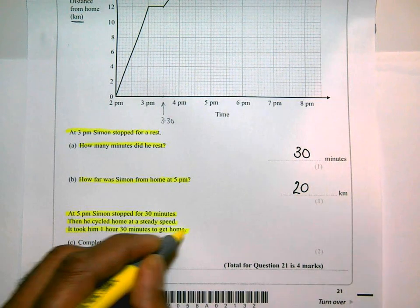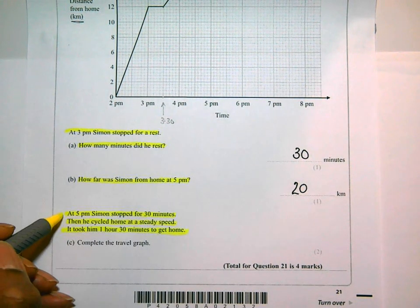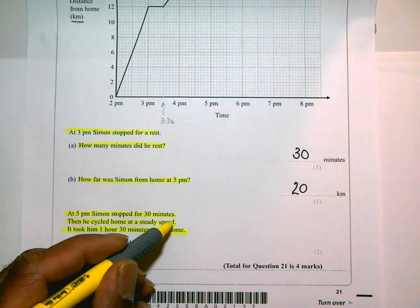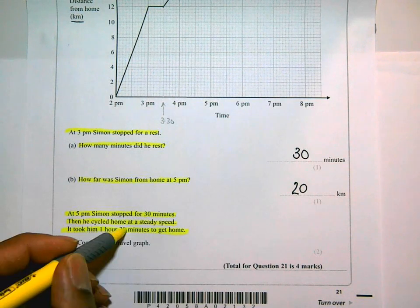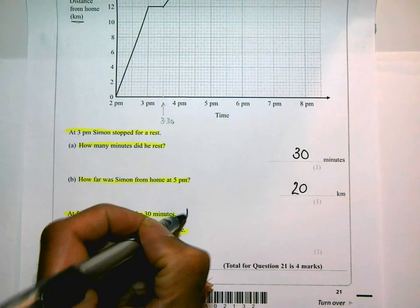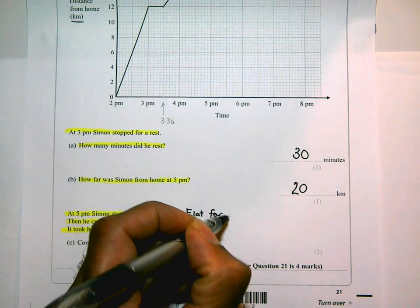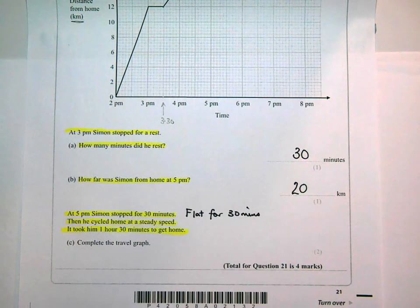So he stopped for 30 minutes. And then he cycled home at steady speed. That means it's going to be a straight line. Right? And it took him an hour and 30 minutes. So I'm going to break this down. Because he stopped for 30 minutes, it's going to be flat for 30 minutes. So the line is going to be horizontal. He cycled home at a steady speed. So it's going to be a straight line.